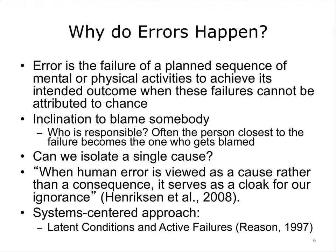We have established that errors are a matter of serious concern. Let's take a step back and analyze the nature of errors. According to one of the pioneers in this field, James Reason, error is the failure of a planned sequence of mental or physical activities to achieve its intended outcome when these failures cannot be attributed to chance. Too often the term human error connotates blame in a search for the guilty culprits, suggesting some sort of human deficiency or irresponsible behavior. Often we cannot isolate a single cause. Human factors researchers emphasize the need for a systems-centered approach. James Reason introduced an important distinction between latent and active failures.